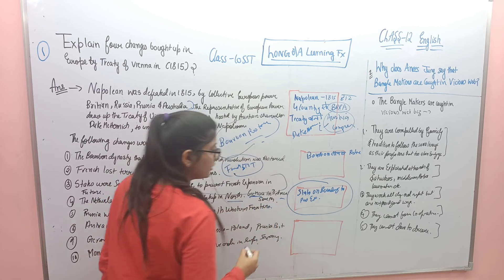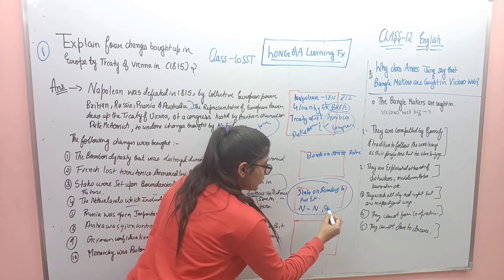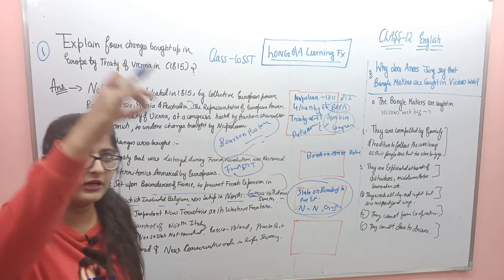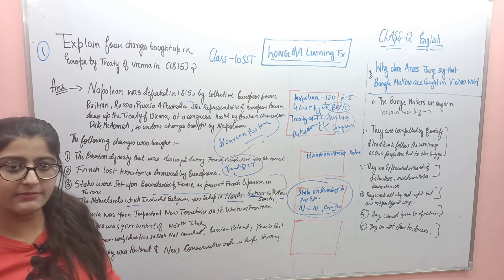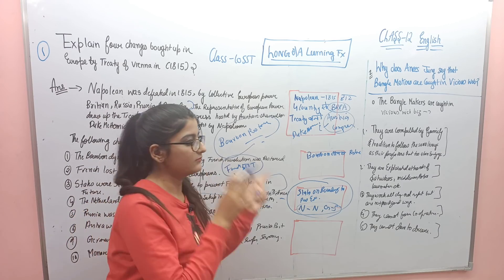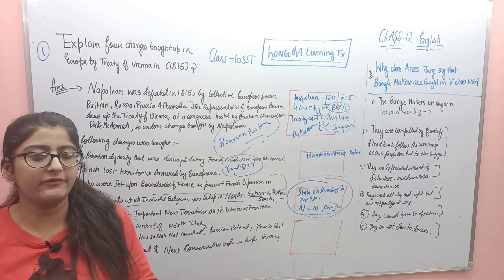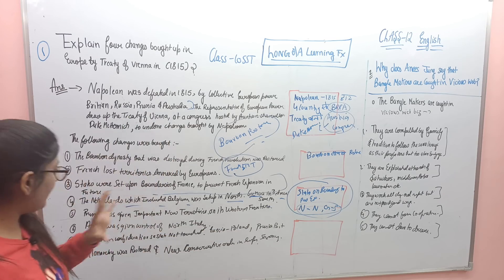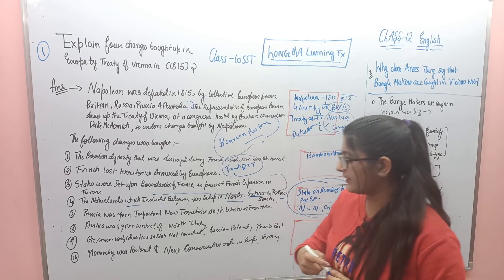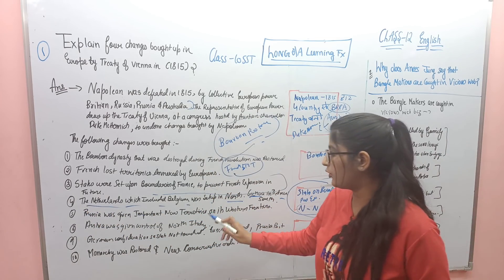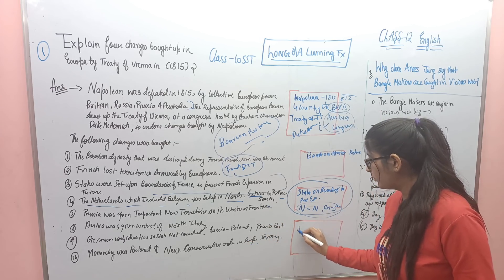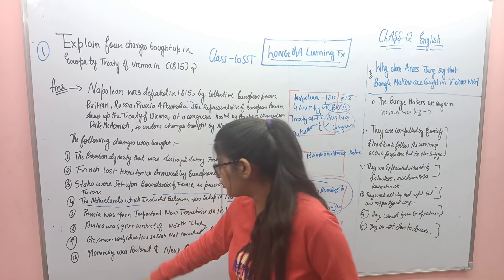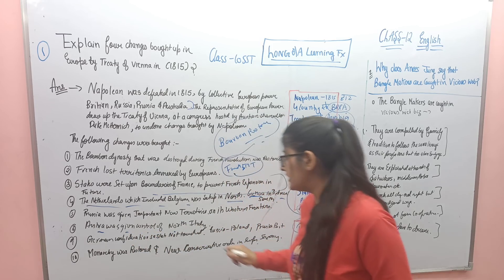Next is the Netherlands, which included Belgium, was set up in the north and Genoa in the south. Toh keyword: 'Netherlands in north, Genoa in south.' Or N-N-G-S abbreviation. Netherlands bana north mein, Genoa bana south mein — that's your fourth keyword. Then Prussia was given important new territories on the western frontier — keyword: 'Prussia new territories.' Prussia was given new territories — fourth point learned.